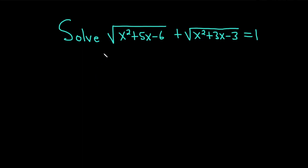Hello, in this video we're going to solve an equation with two square roots. We have the square root of x squared plus 5x minus 6, plus the square root of x squared plus 3x minus 3, and it's all equal to 1. Let's go ahead and carefully work through this.